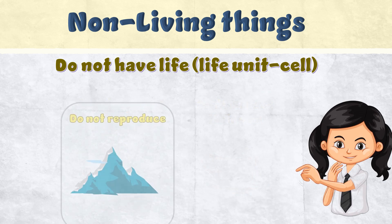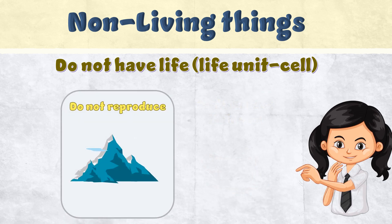Non-living things do not have the capability to reproduce. They cannot make their own kinds. Like a mountain — a mountain doesn't give birth to baby mountains. They cannot make mountains by themselves.